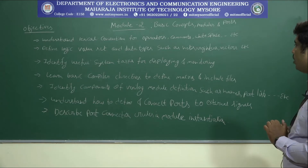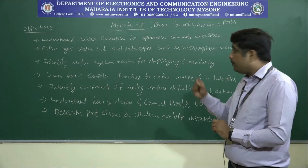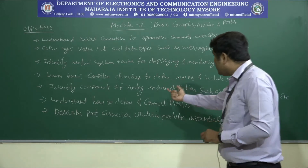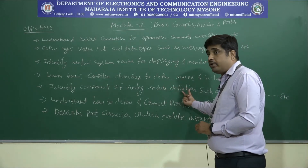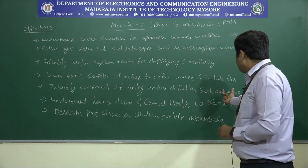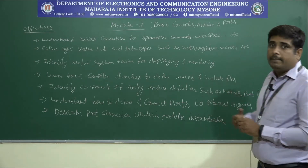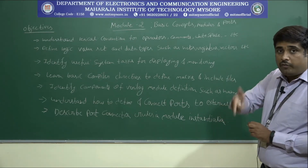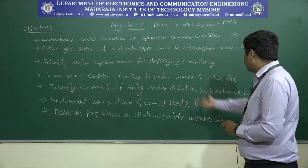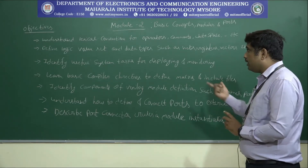The fifth objective is to identify the components of Verilog module definitions. In the first module we defined a module, but here we have to discuss in detail about each module — that is why we discuss module definition. This includes module names, port lists, and so on. We have to discuss module name and ports; for example, input port and output port we already discussed in the first module, but here we discuss in detail about module definition, names, and port lists.